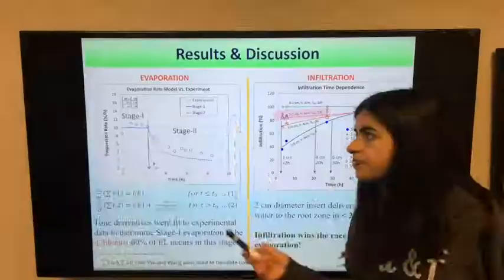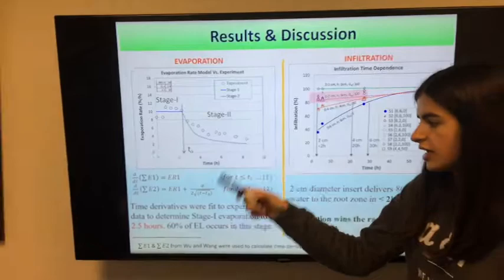For the evaporation model, I used these two time derivatives and fit them to the data, and I found that in 2.5 hours, 60% of evaporation loss occurs.